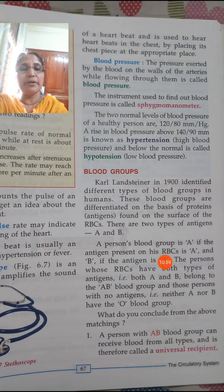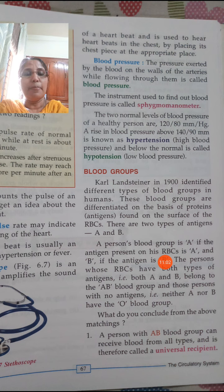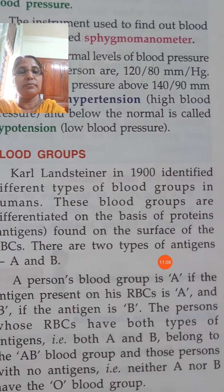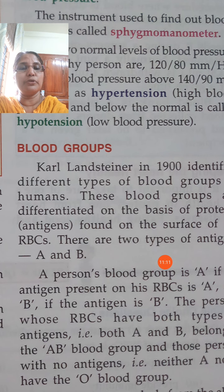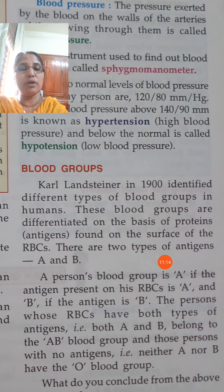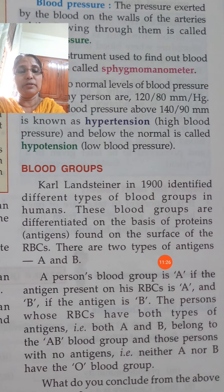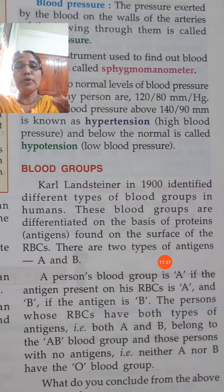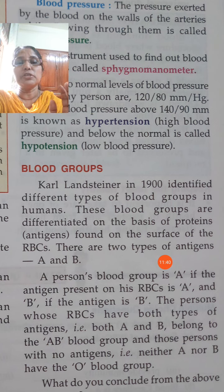There are blood groups. A scientist known as Karl Landsteiner identified different types of blood groups in humans. He discovered four kinds of blood groups in humans. On the basis of which kind of protein — antigen — is present on the red blood cell, he classified blood into four major groups.